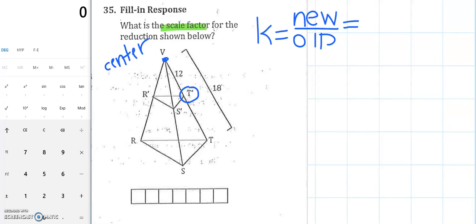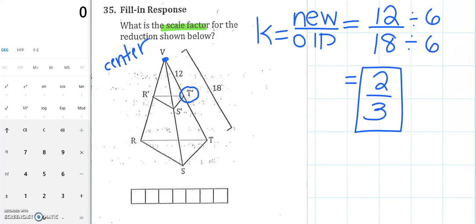So in this case, our new distance from our center of dilation, V, to T prime, our new distance is 12. Our old distance, which was further away, V to our regular T, is 18. So 12 to 18 is our scale factor. We just need to simplify. So 12 and 18, the GCF is going to be 6. So I can divide the top and the bottom by 6. So 12 divided by 6 is going to be 2, 18 divided by 6 is going to be 3. So 2 thirds is a scale factor of your reduction. It's less than 1, so that's how we know it's definitely a reduction, and your figure has shrunk. So in this little box, we're going to put 2, division symbol, 3.